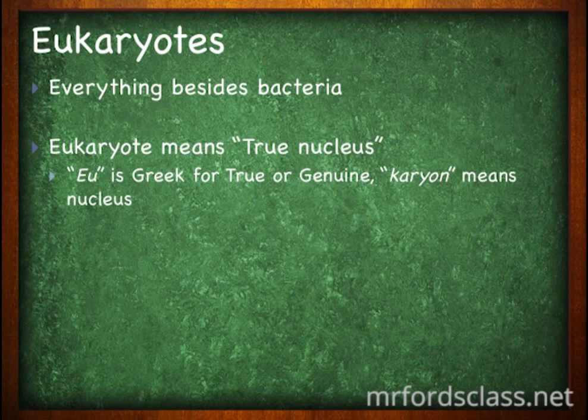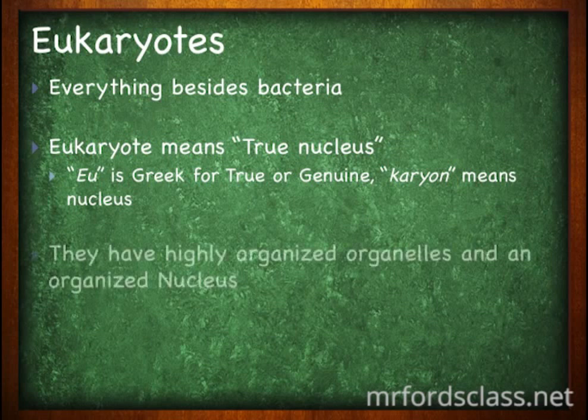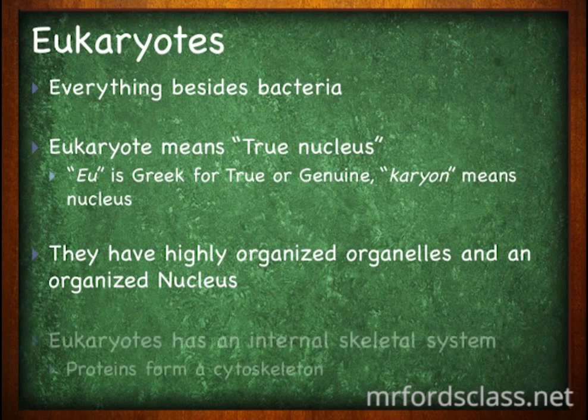This is us — humans, dogs, cats, plants. They have a very highly organized grouping of organelles and an organized nucleus. The nucleus is going to be self-contained within a membrane. Eukaryotes also have an internal skeletal system, not made of bone, but made of proteins.